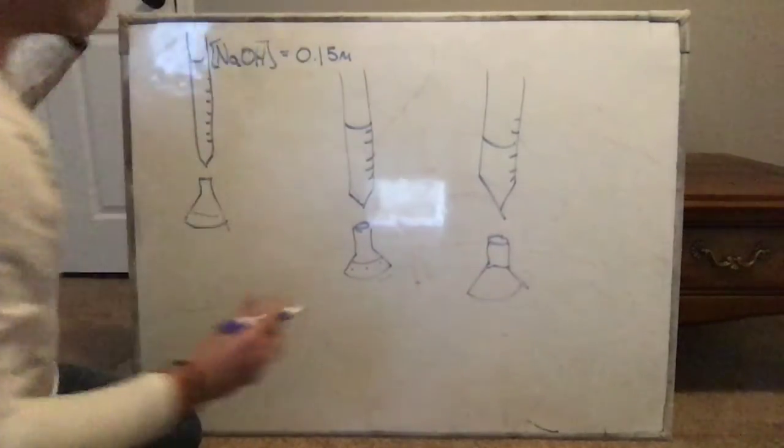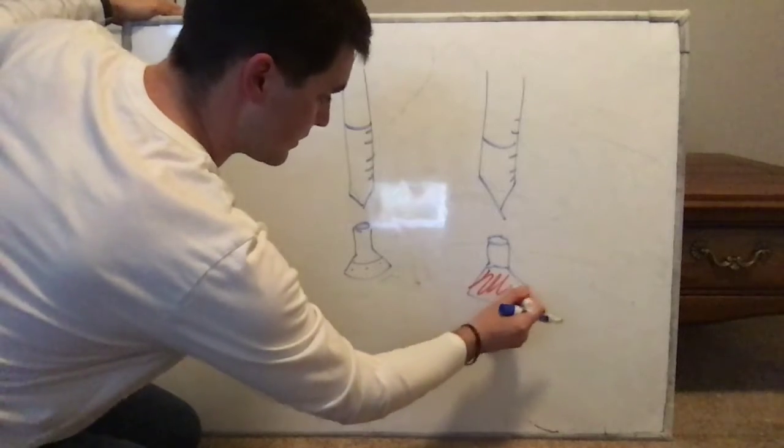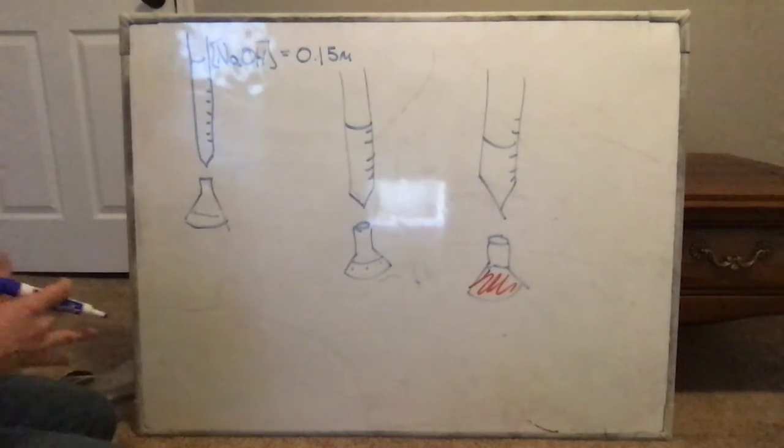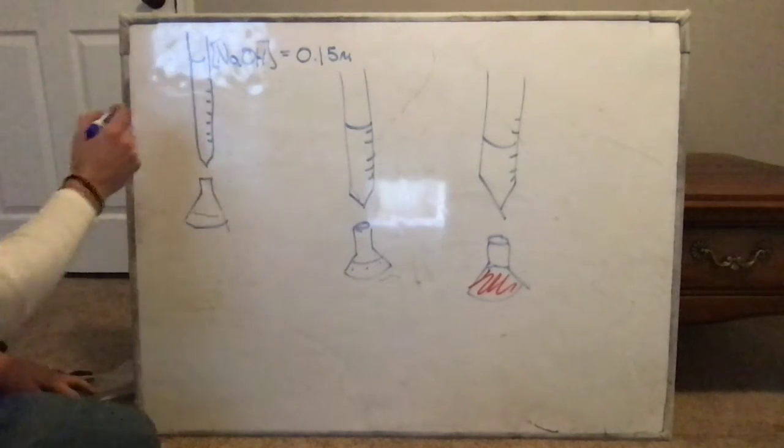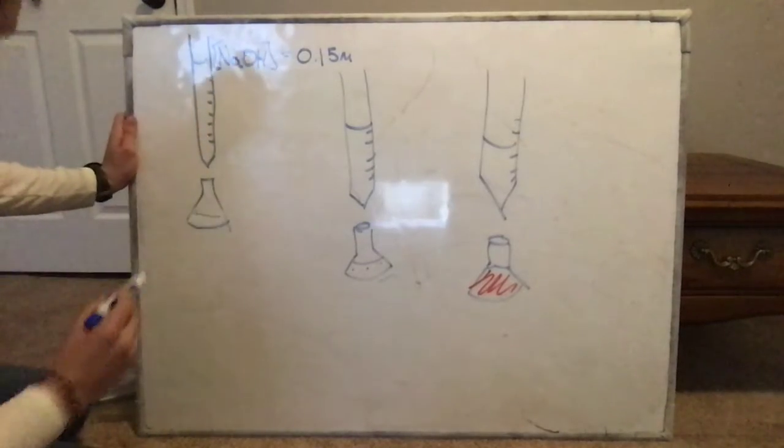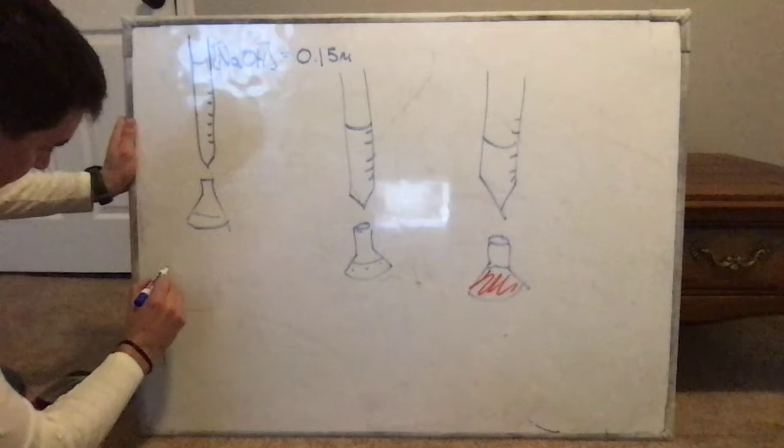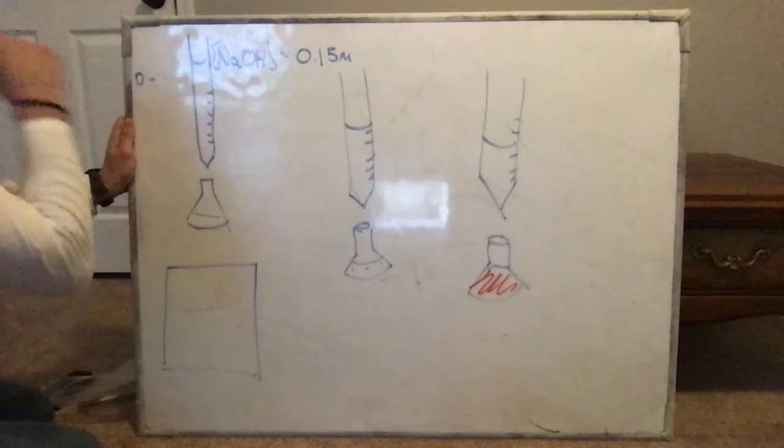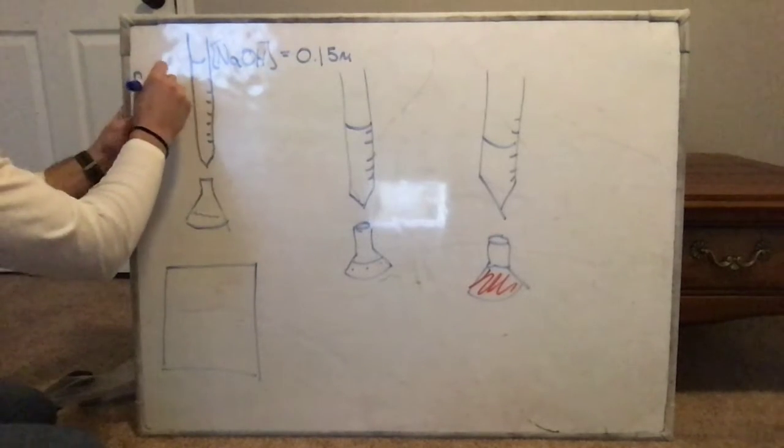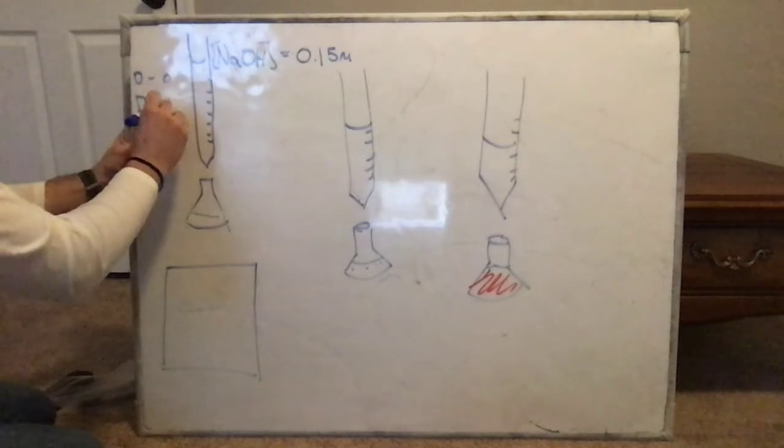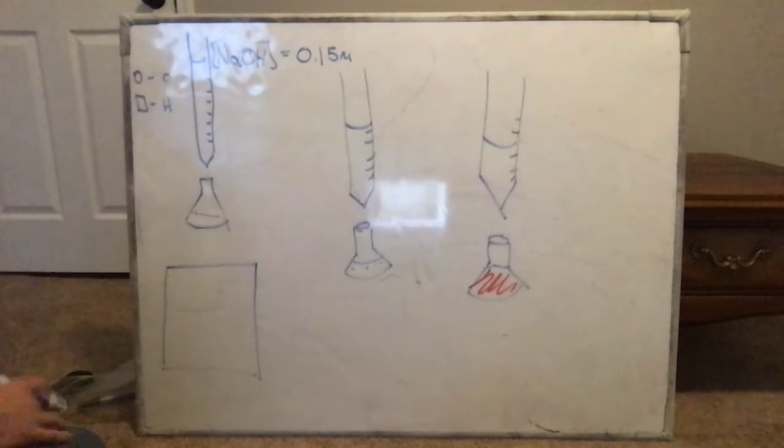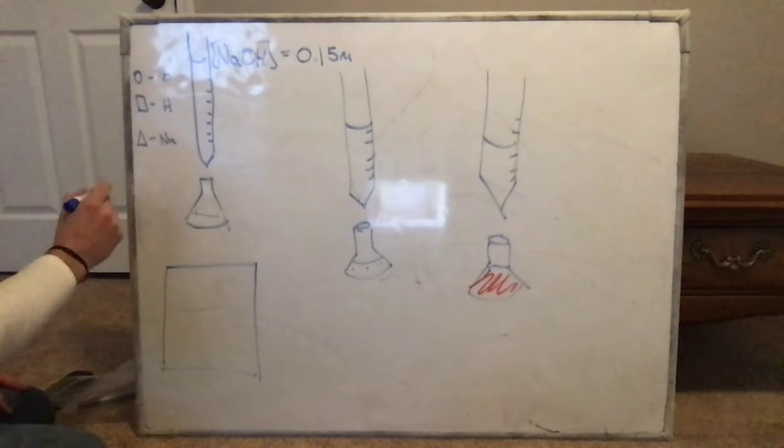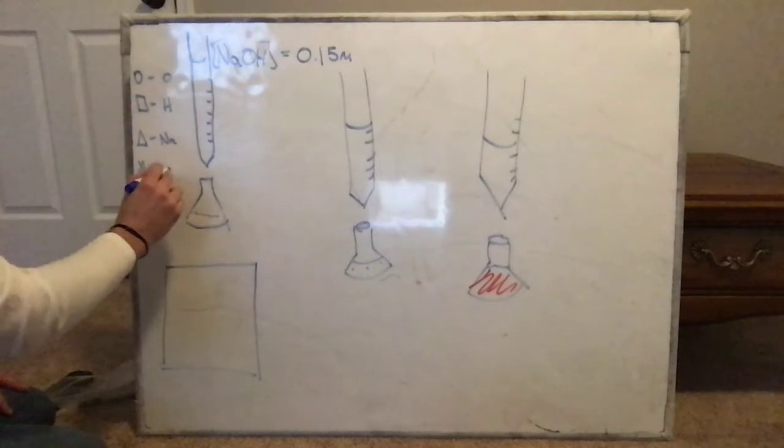And then we're going to model one third and final part of our titration, and that's when we've used quite a bit of base and we've now turned our Erlenmeyer flask, or the solution in our Erlenmeyer flask, we've turned it that pink color. This is our pH indicator telling us that we've reached our equivalence point, or neutralization point. So let's go ahead and set up a key first. I'm going to use particles. So we'll go an open circle, we'll call that our oxygens. We'll call a square our hydrogens. We can say triangle is going to be our sodium, and a star is going to be our chlorine.